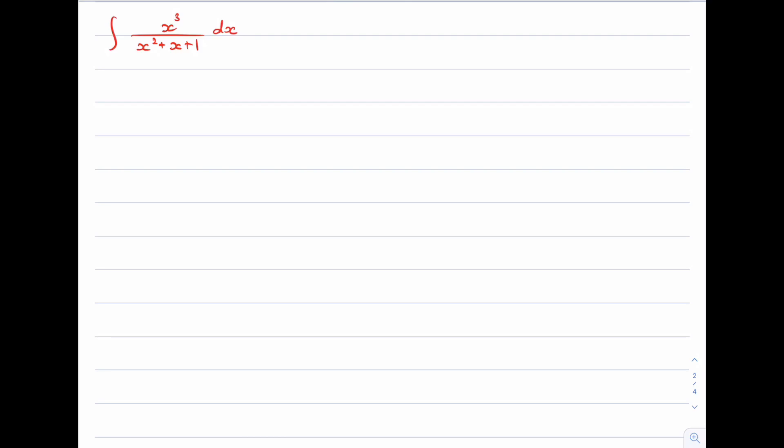So we're looking at x cubed over x squared plus x plus 1. The numerator has a degree 3 and the denominator has a degree 2. Now what we want to do is massage our numerator, try to fiddle around with it to make it look like the denominator. The aim is to force the denominator to appear in the numerator.